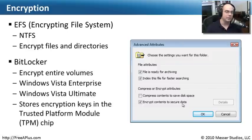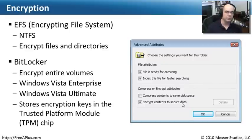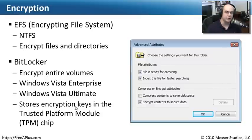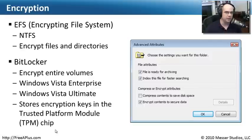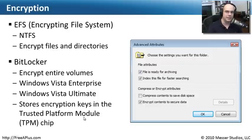Some people prefer to encrypt an entire drive. Windows has a capability in Windows Vista Enterprise and Windows Vista Ultimate to encrypt entire volumes, called BitLocker. It's commonly used with portable systems or USB keys. It uses a set of encryption algorithms to do that, and it stores the encryption keys in a chip on the computer called the Trusted Platform Module, or TPM chip, which is specifically designed for these types of security tasks.